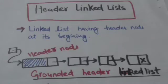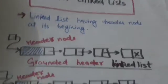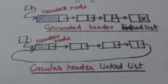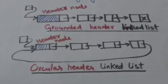A header linked list whose last node contains null pointer is called grounded header linked list, and a header linked list whose last node points to header node is called circular header linked list.